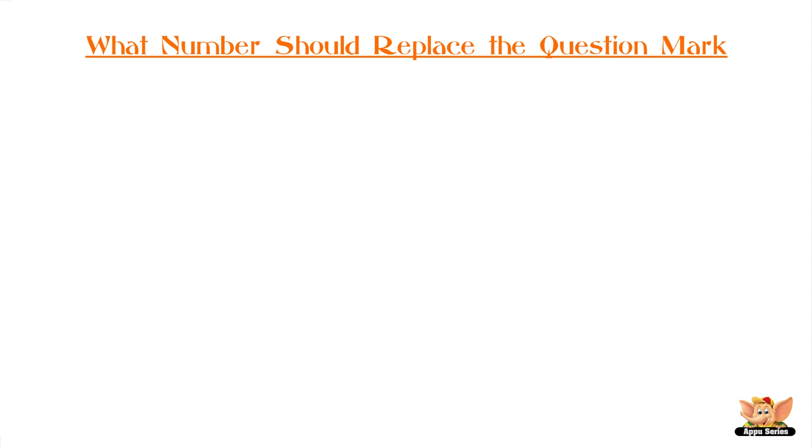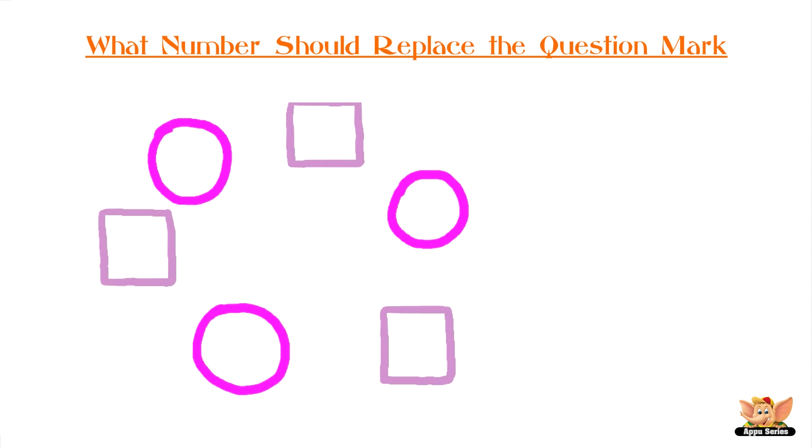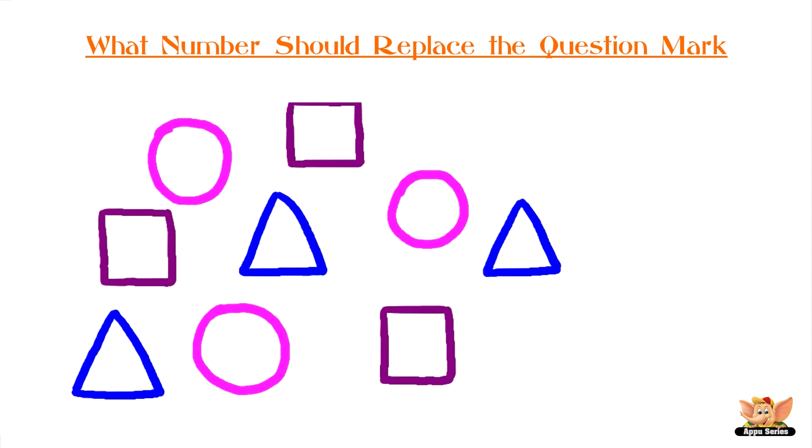What number should replace the question mark? There are three circles, three squares, and three triangles. Each of these shapes have a number assigned to them, but a square is missing a number. Can you identify what number fits that square? The options are A: 8, B: 9, C: 6, D: 13. Your time starts now.